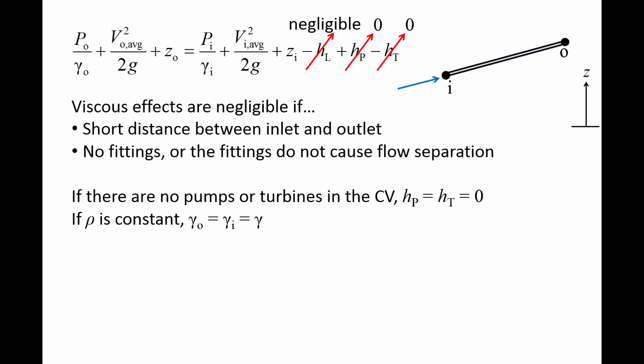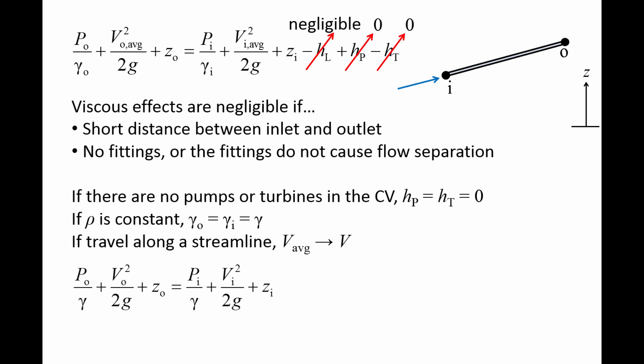Furthermore, if we make the control volume so narrow that it becomes an infinitely thin streamline, we can drop the average subscript on the velocity since the inlet and outlet now consist of a single point. The conservation of energy equation has now become the pressure at the end of the streamline over gamma plus the speed squared over 2g plus the elevation at the end equals the pressure at the beginning over gamma plus the speed squared over 2g plus the elevation at the beginning of the streamline.